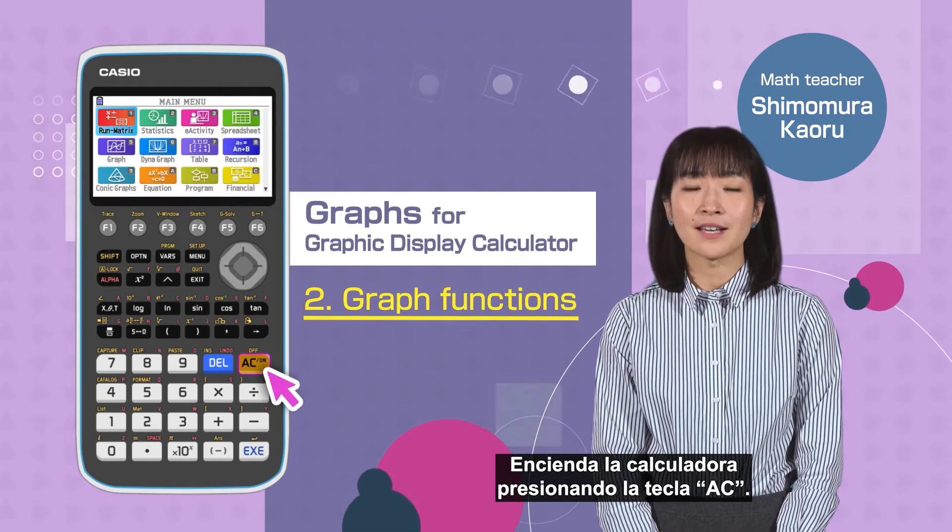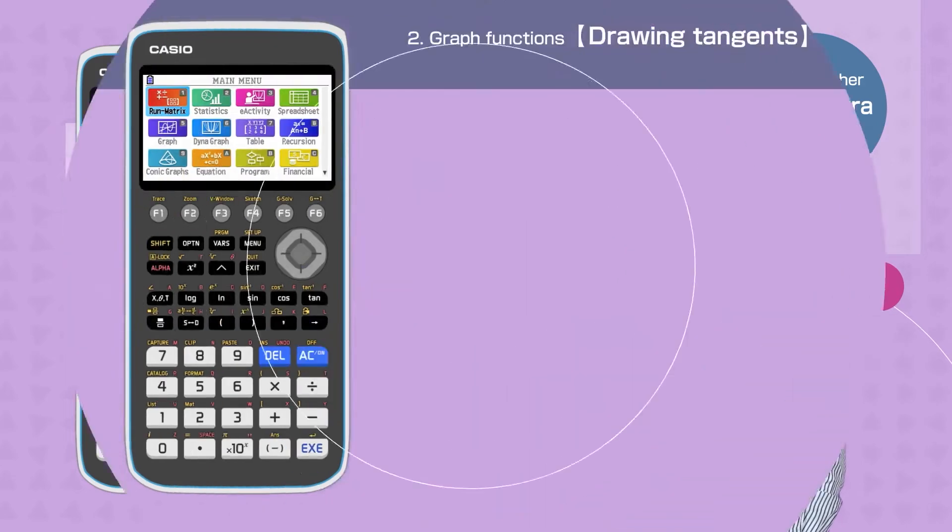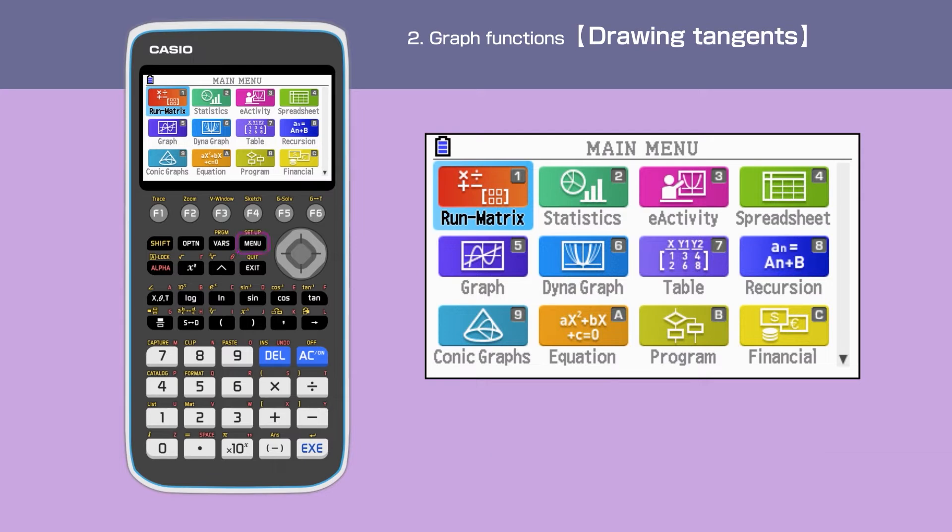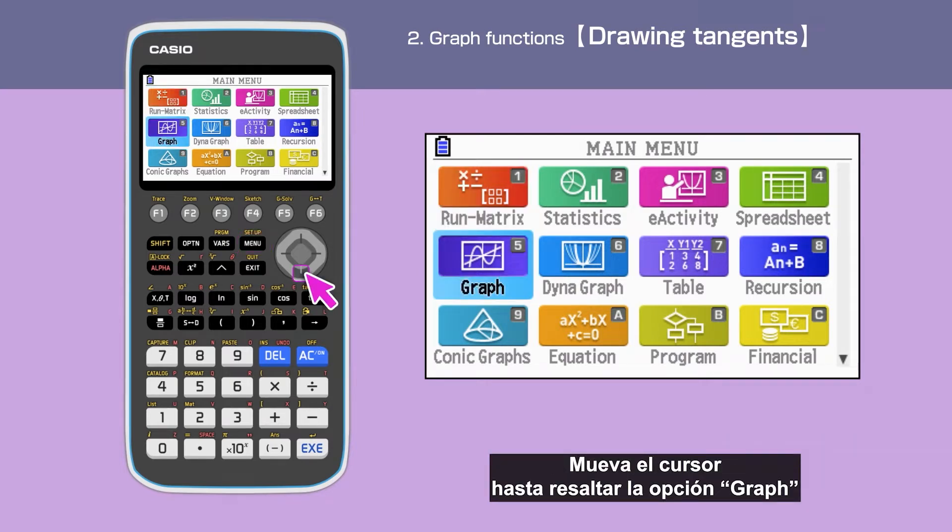Switch on your calculator by pressing the AC button. Press the menu button to open the main menu, then move the cursor or press 5 to select the graph menu.